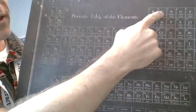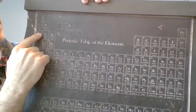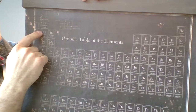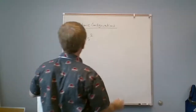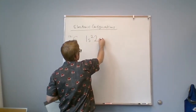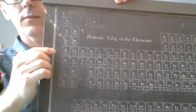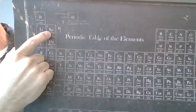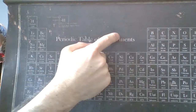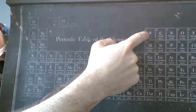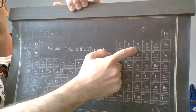Carbon is over in line two, so I'm not quite there yet. Starting line two, I've got two boxes in the s block in line two. So I'm on line two, in the s block, with two boxes — giving me 2s². I'm now over at beryllium. Then I've got to go all the way across; I'm still in line two but now I'm in the p block. To get to carbon I've got to go two boxes into the p block.